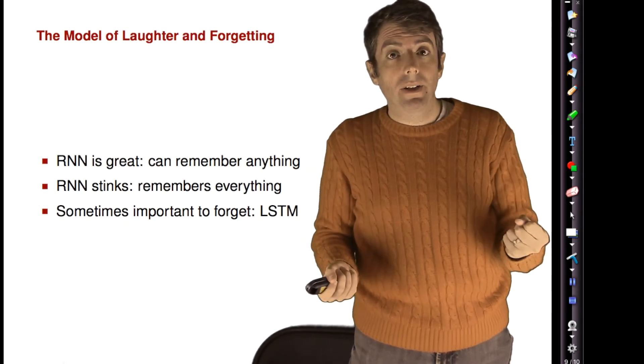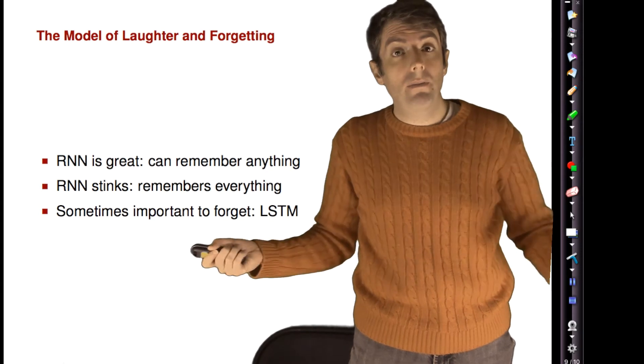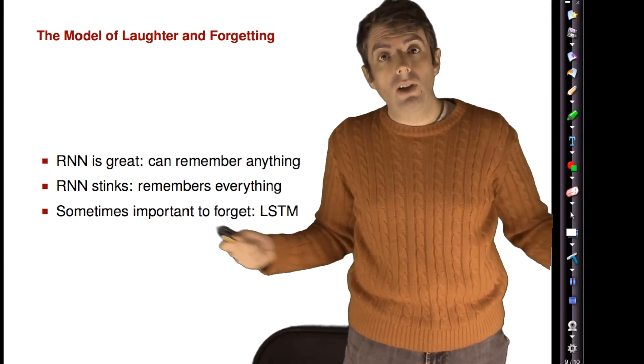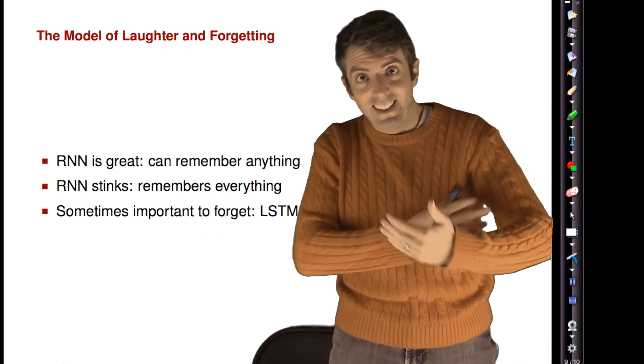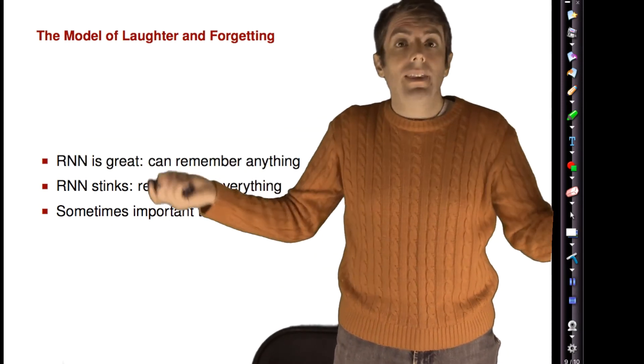The great thing about a recurrent neural network is that it remembers everything. It can have these very long-range dependencies that capture the entire sequence. But that's also a downside.